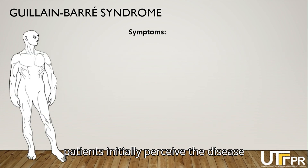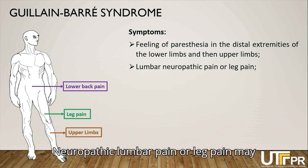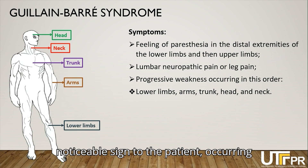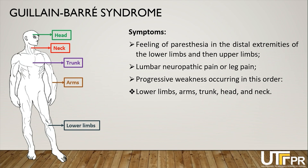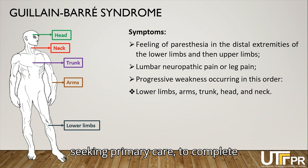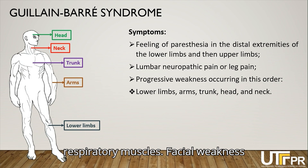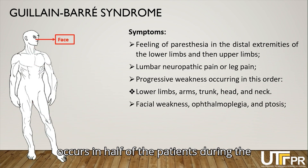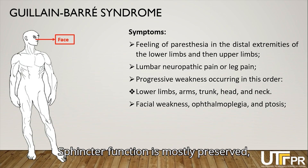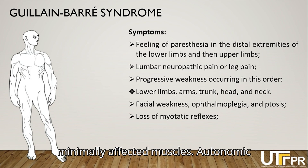Most patients initially perceive the disease through paresthesias in the distal extremities of the lower limbs, followed by the upper limbs. Neuropathic lumbar or leg pain may be seen in at least 50% of cases. Progressive weakness is the most noticeable sign, occurring in the following order: lower limbs, arms, trunk, head, and neck. Intensity can vary from mild weakness to complete tetraplegia requiring mechanical ventilation due to paralysis of accessory respiratory muscles. Facial weakness occurs in half of patients, and between 5% and 15% develop ophthalmoplegia and ptosis. Sphincter function is mostly preserved, while loss of myotatic reflexes may precede sensory symptoms.